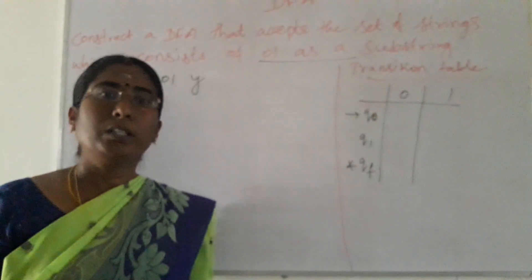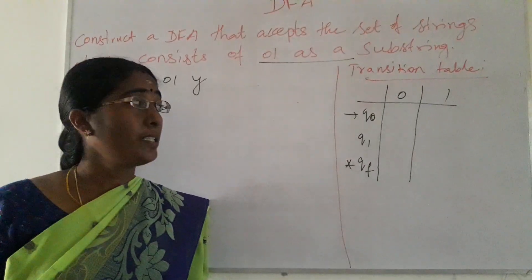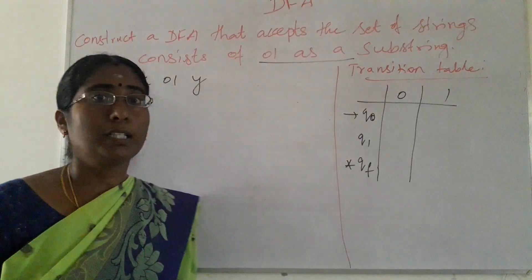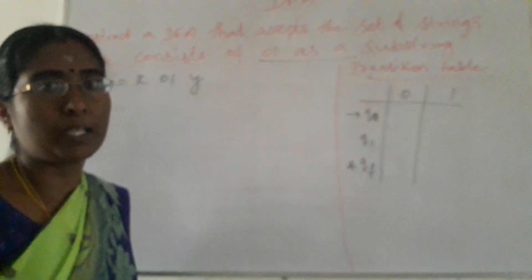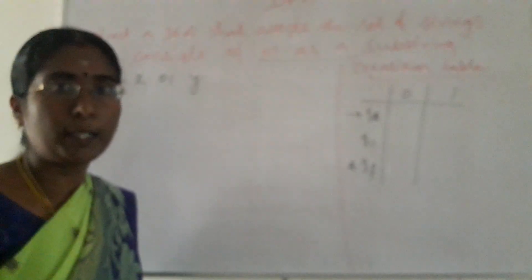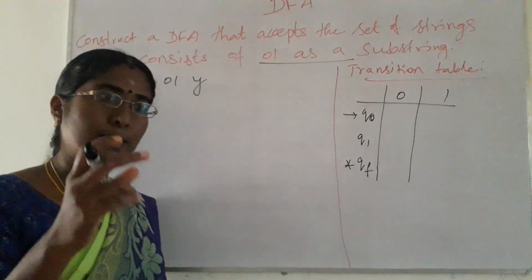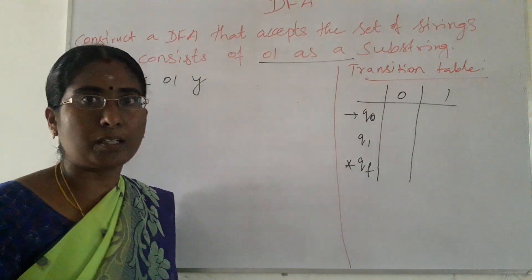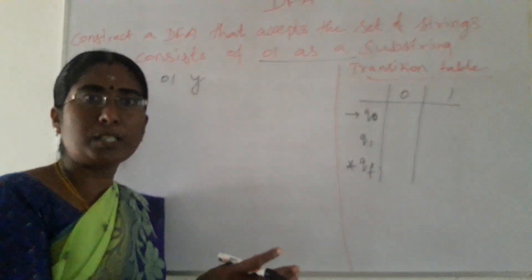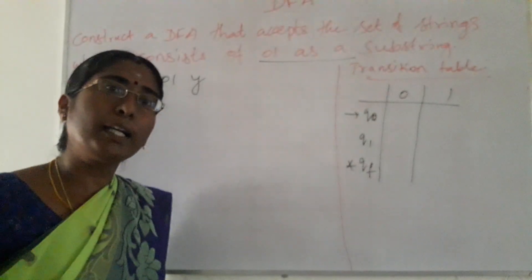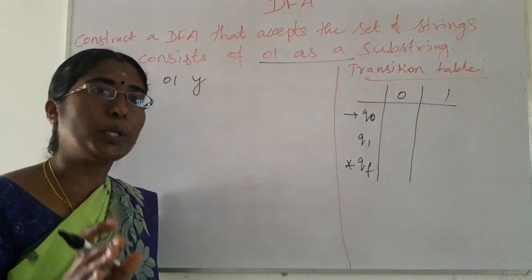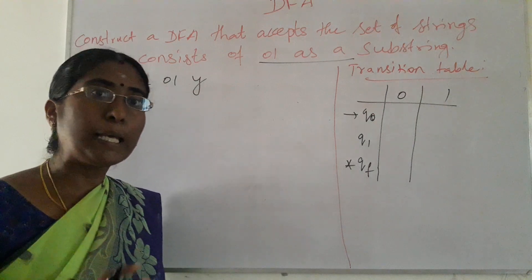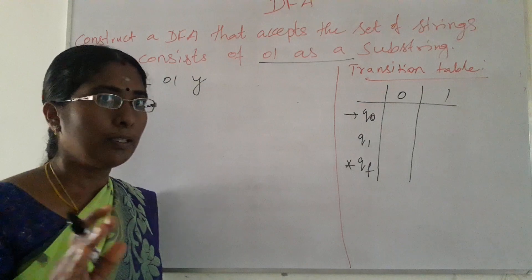Hello friends. Now we will consider an example of a constructed DFA that accepts a set of strings which consist of '01' as a substring. The '01' substring should be present anywhere in the string — either at the starting, in the middle, or at the end of the string. Anywhere, the string should have '01' as a substring in sequence.